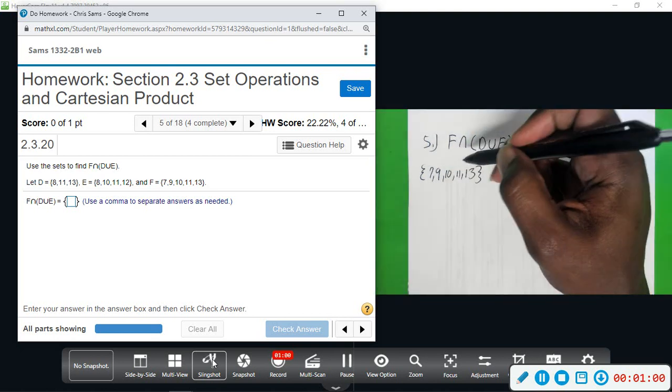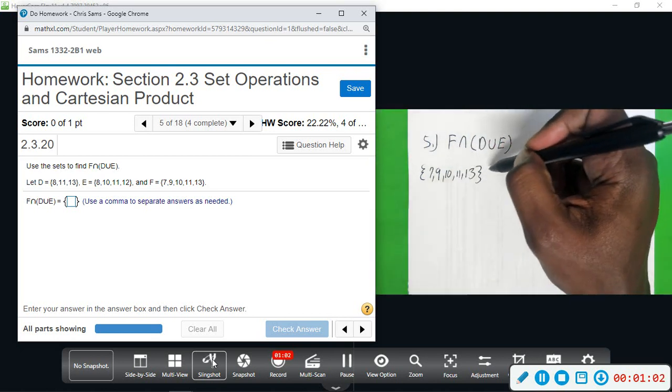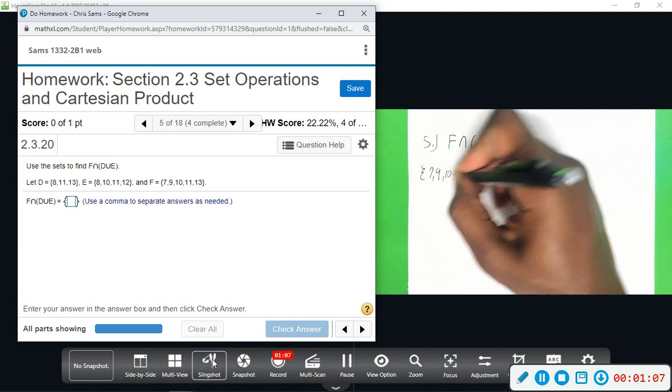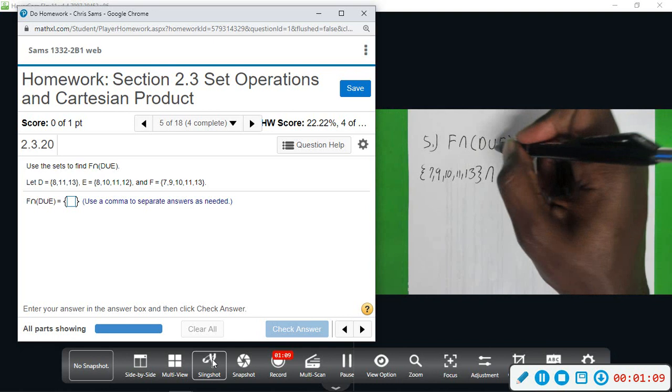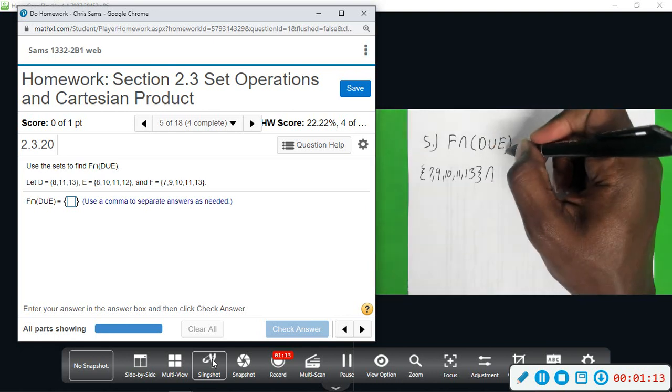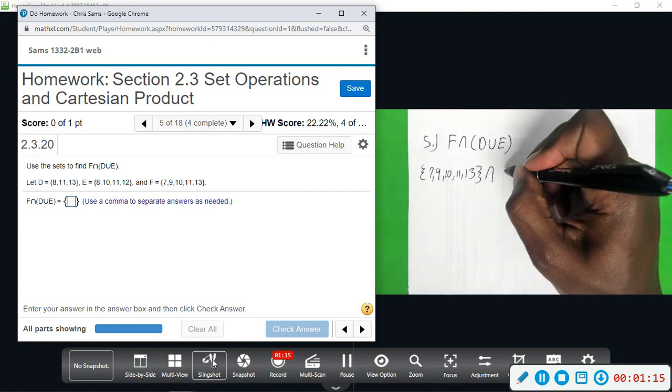Okay. So this is the set F: seven, nine, ten, eleven, thirteen. All right, I want to intersect that, find out what it has in common with D union E. So let's find D union E. We're going to add these two sets together.